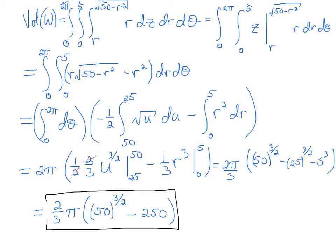This integral here, I'm going to use a u substitution. So I'm going to let u equal 50 minus r squared. And then du is equal to minus 2 r dr.